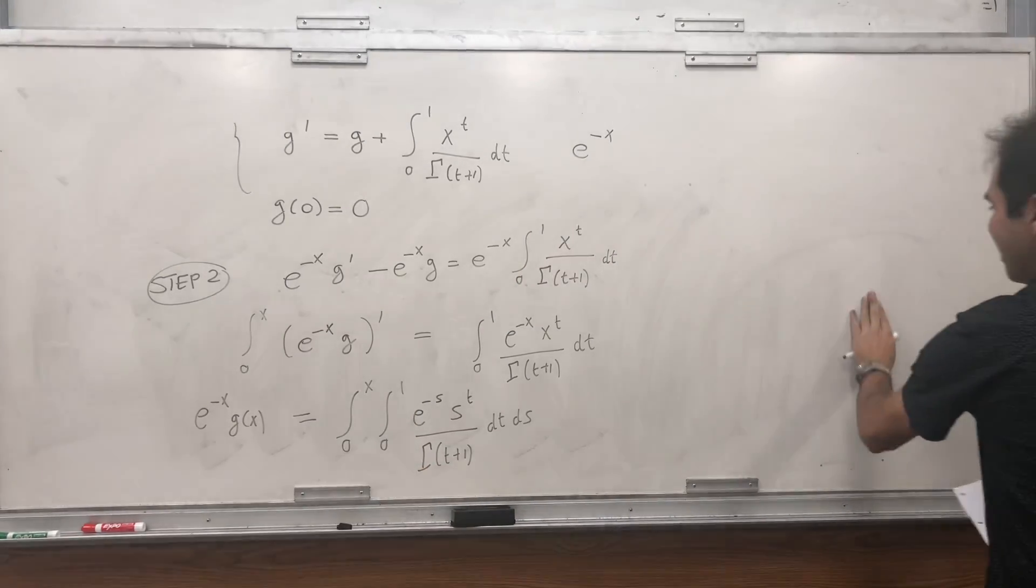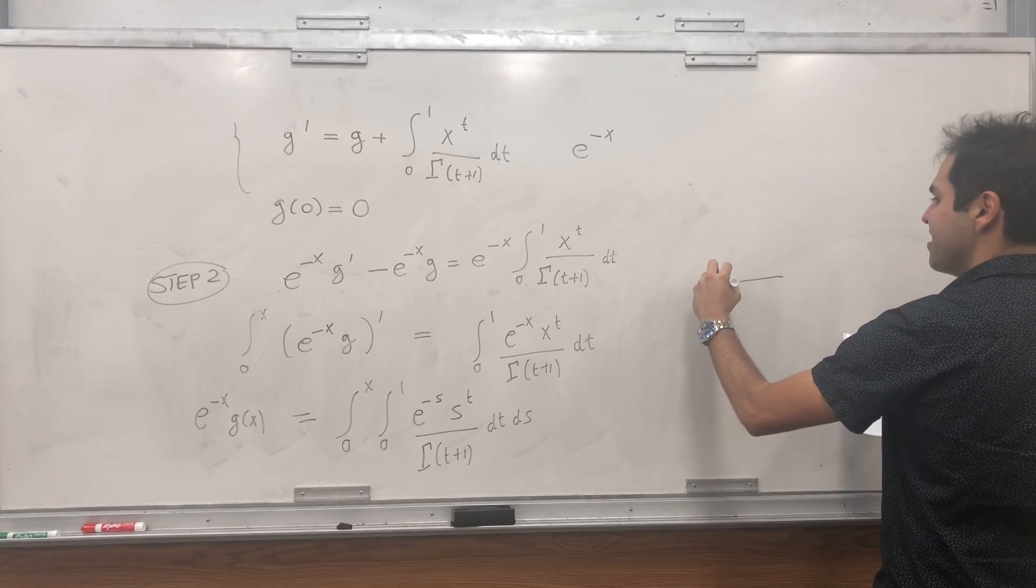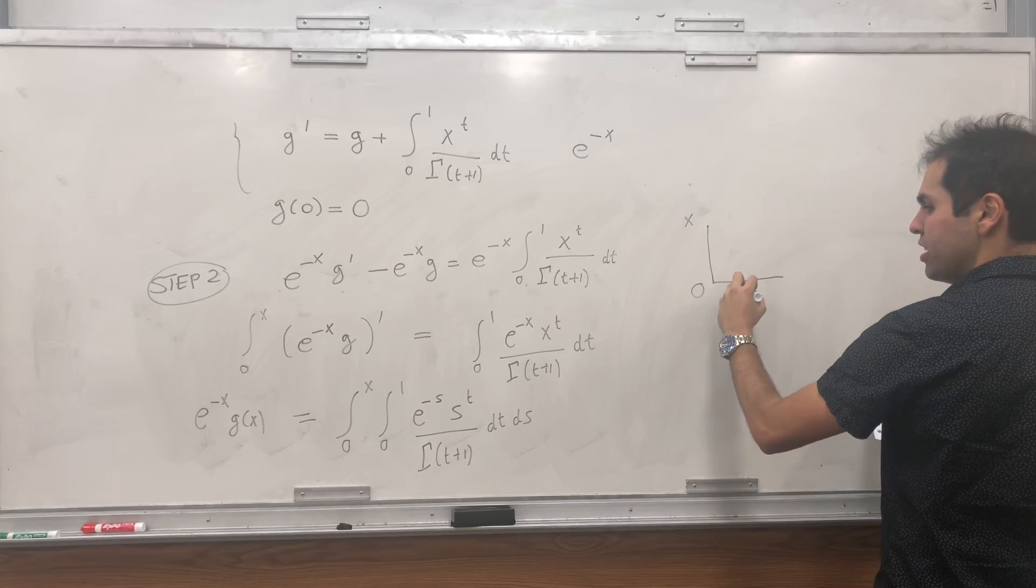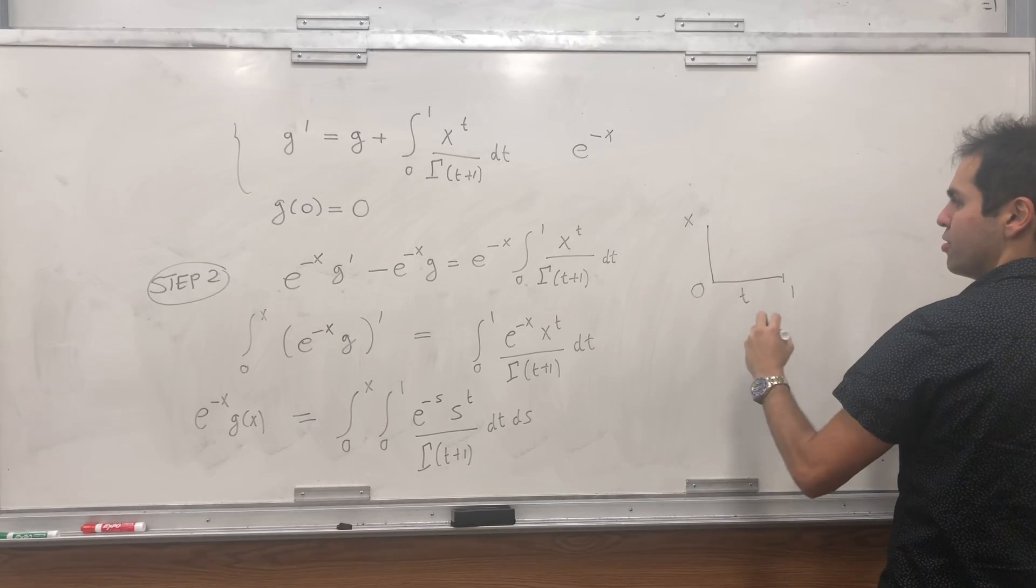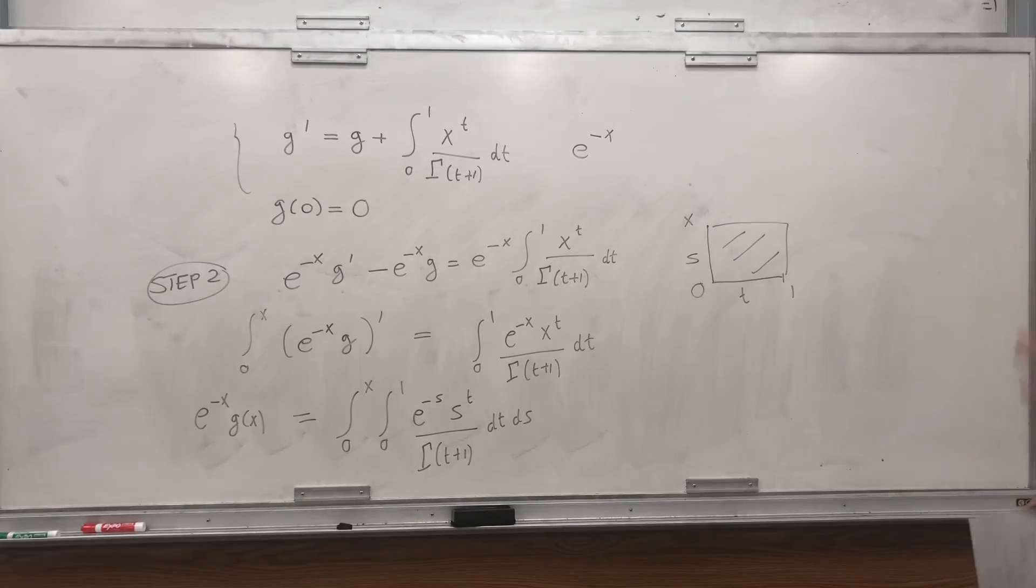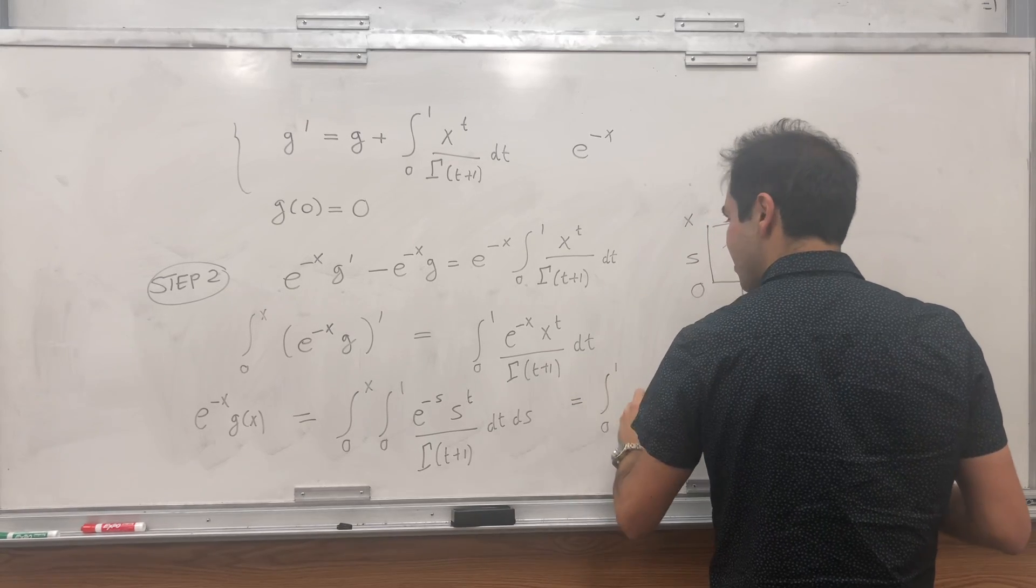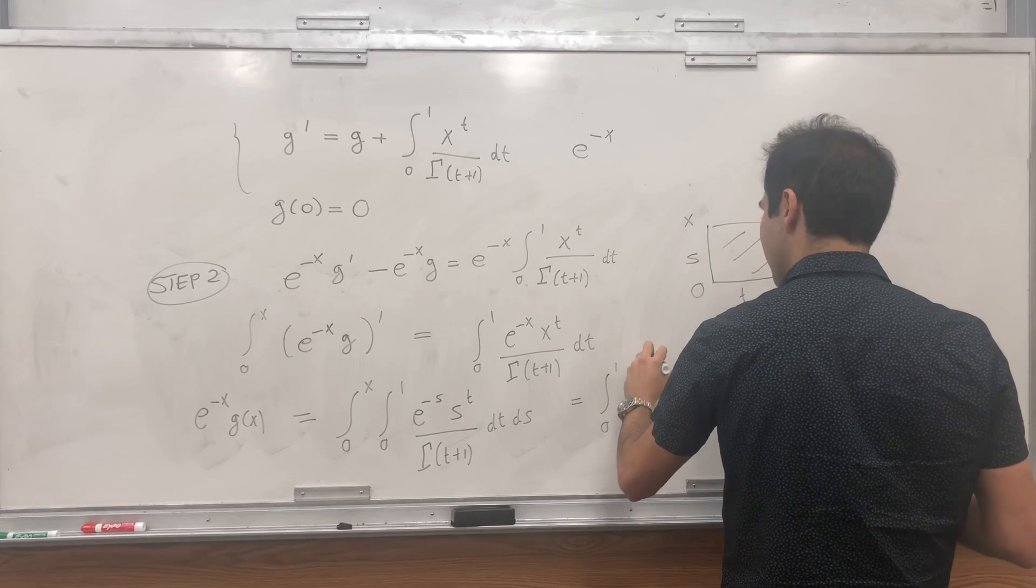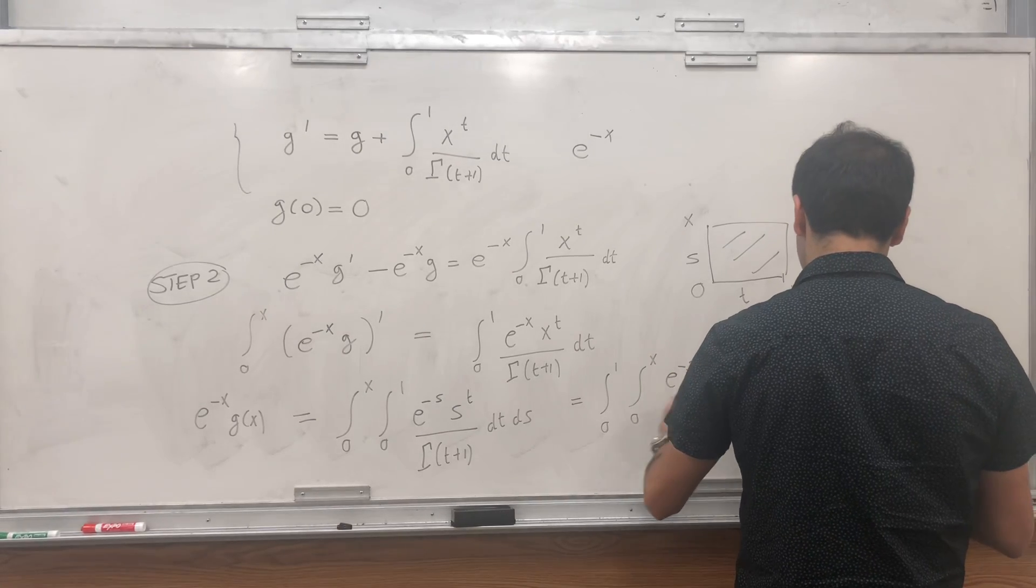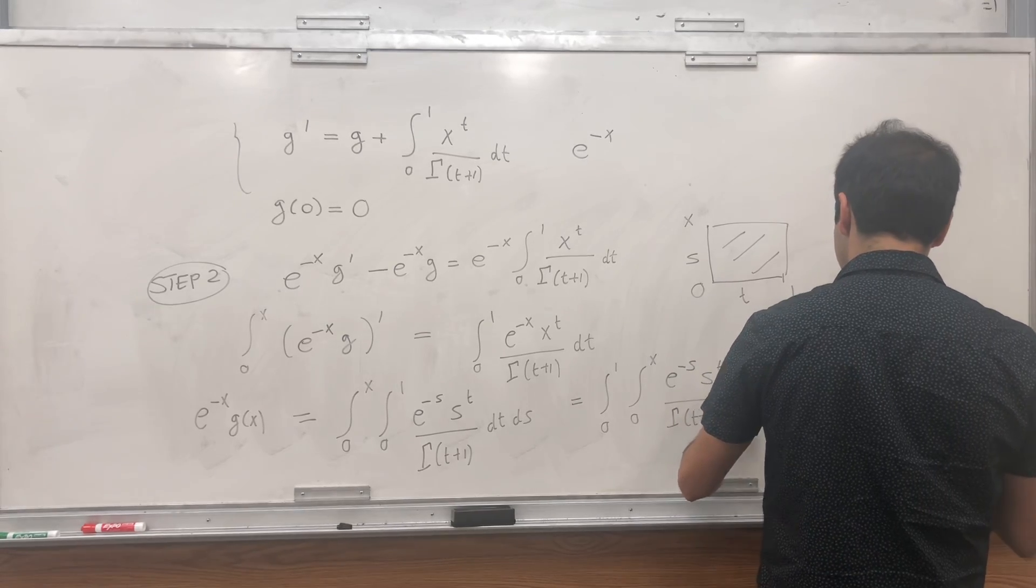And let's just Fubini that. And it looks like a complicated Fubini problem, but it's not. Because you see x is fixed. So what you're doing, you're integrating t from 0 to 1, and then s from 0 to x. So it's not a triangle here, it's just a rectangle. So Fubini that, integral from 0 to 1, integral from 0 to x, e to the minus s, s to the t, over gamma of t plus 1, ds dt.